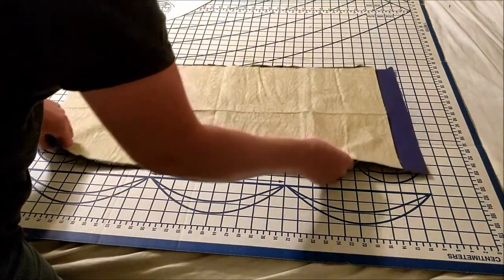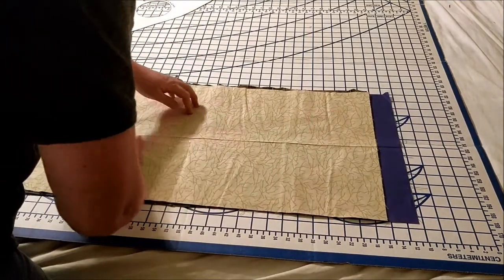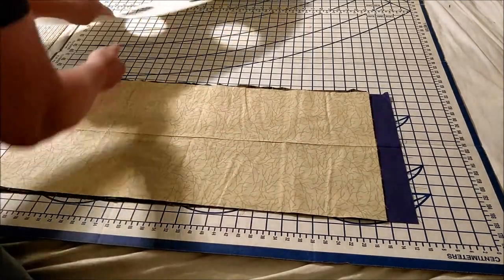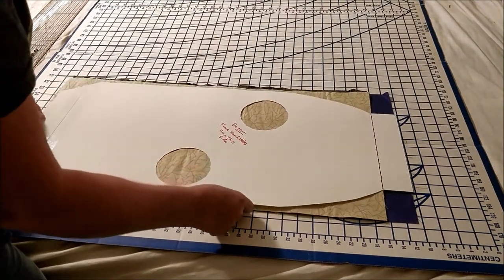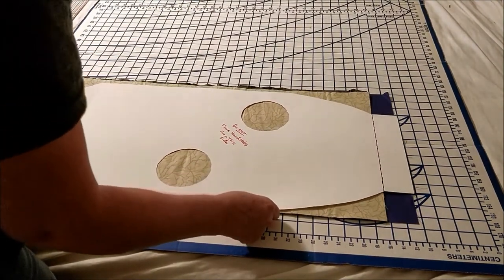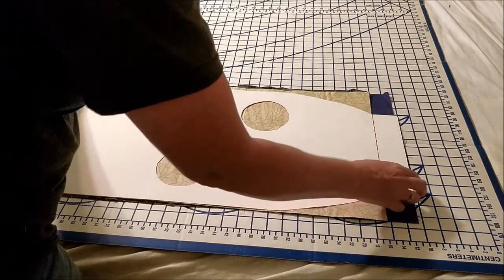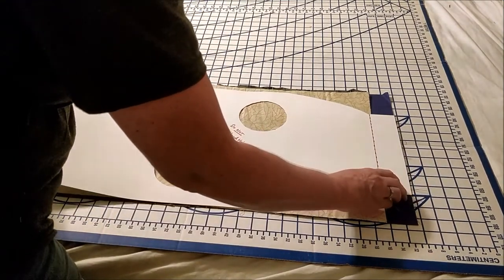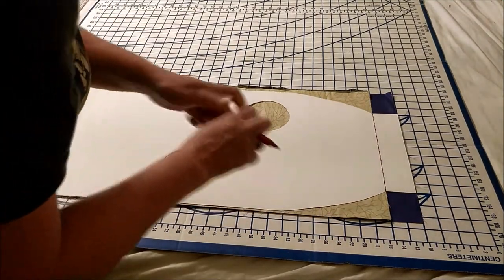Now, you're going to take your second stack and lay it out the same way you did your first. You're going to take your pattern and flip it over because you want this one to be a mirror image of the first. Again, line up that line with the top. Adjust it if you need to. Line up the one side. And again, trace around the outside.